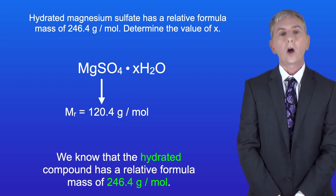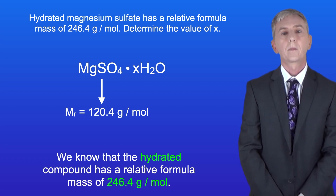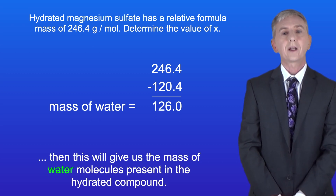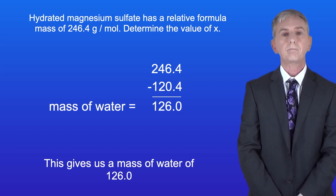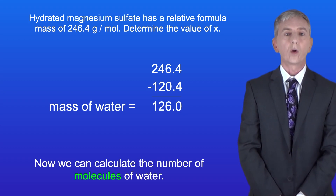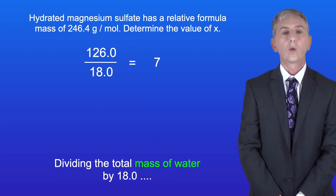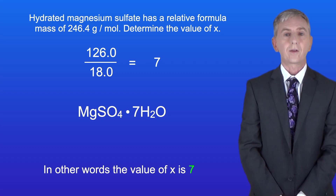We know that the hydrated compound has a relative formula mass of 246.4 grams per mole. If we subtract the relative formula mass of the magnesium sulfate, this gives us the mass of water molecules present in the hydrated compound — a mass of water of 126.0. Each water molecule has a relative molecular mass of 18.0 grams per mole. Dividing the total mass of water by 18.0 tells us that we've got seven molecules of water per magnesium sulfate. In other words, the value of X is seven.